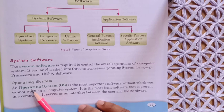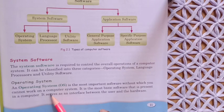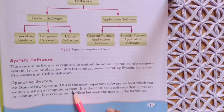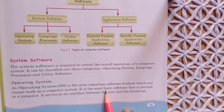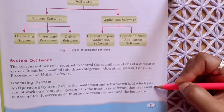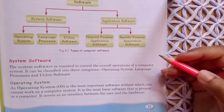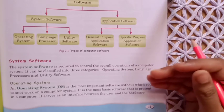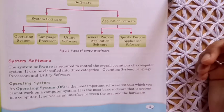First is the operating system. An operating system (OS) is the most important software without which you cannot work on a computer. Without an operating system, who will run the booting process? Who will switch on the computer? If Windows 10, Windows 8, or Windows 7 is not installed, the computer will not turn on. It is the most basic software present in a computer. It serves as an interface — a medium — between the user and the hardware devices.